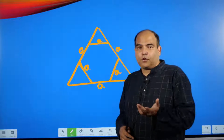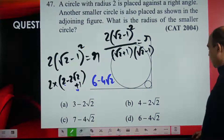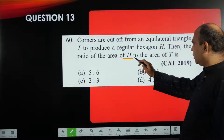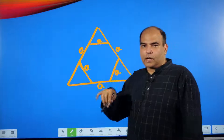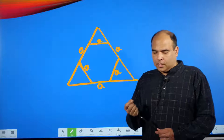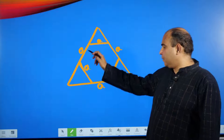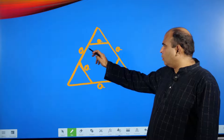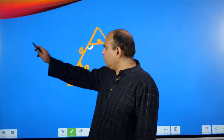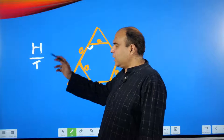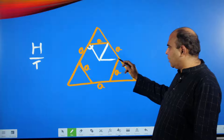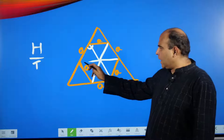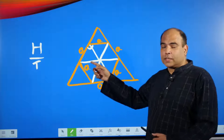The question asks for the ratio of the area of H to T — the regular hexagon to the equilateral triangle. What you need to know: in a regular hexagon, all angles are equal and you can form six equal equilateral triangles inside it. The area of a regular hexagon is six times the area of one equilateral triangle with side a, so area of H = 6 × (√3/4)a².